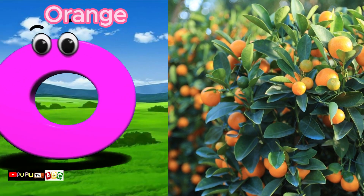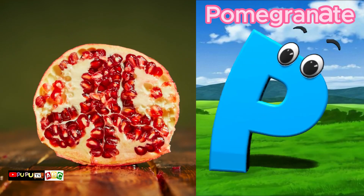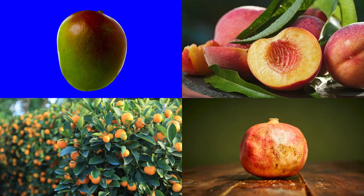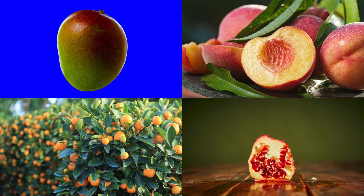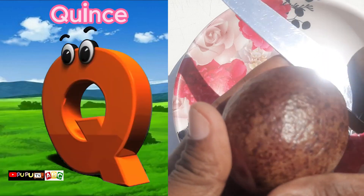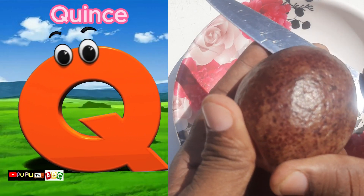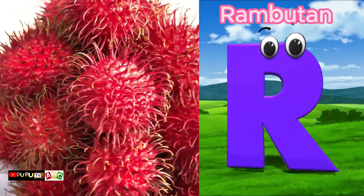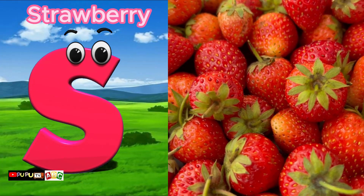O is for Orange. P is for Pomegranate. Q is for Quince. R is for Rambutan. S is for Strawberry.